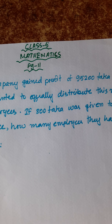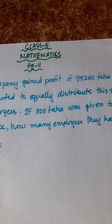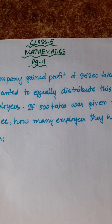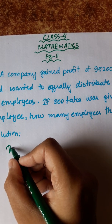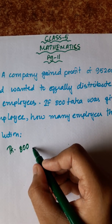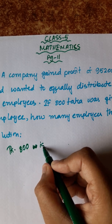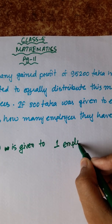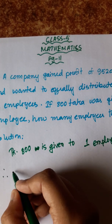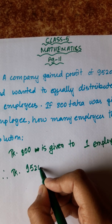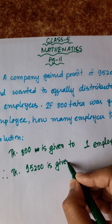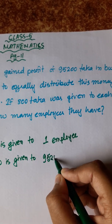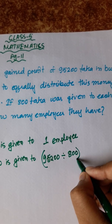Now, the profit is to be distributed equally among the employees. Each employee receives 800 dhaka. Therefore, dhaka 95,200 is given to 95,200 divided by 800 employees.